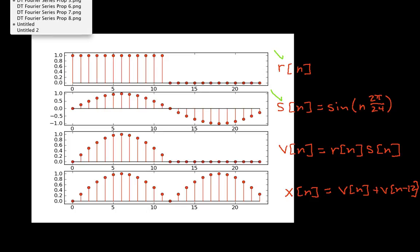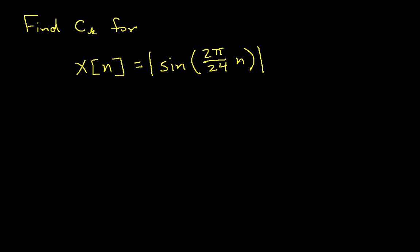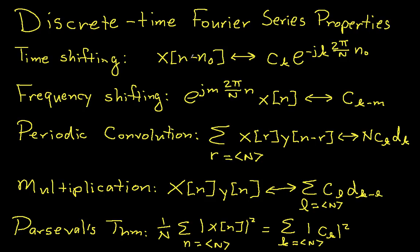Okay. And to see what we should do here, we go back to our list of Fourier series properties. And this is going to be the multiplication property. I have two time signals that I multiply, and their Fourier series coefficients are then given by this expression here, which is called a periodic convolution.